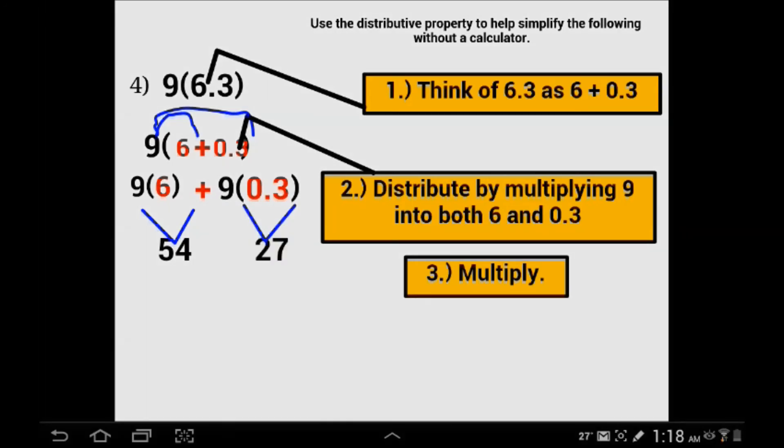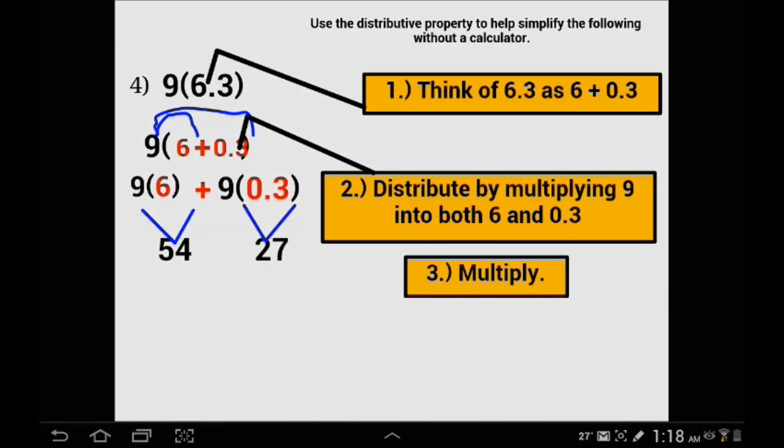9 times 3 is 27, but it is not $27. This is 9 times 3 tenths. So we need to put the decimal in there, and you get 2.7. So be careful when dealing with decimals. We are not doing 9 times 3, we are doing 9 times 3 tenths. The addition is very simple: 54 plus 2.7 is 56.7.